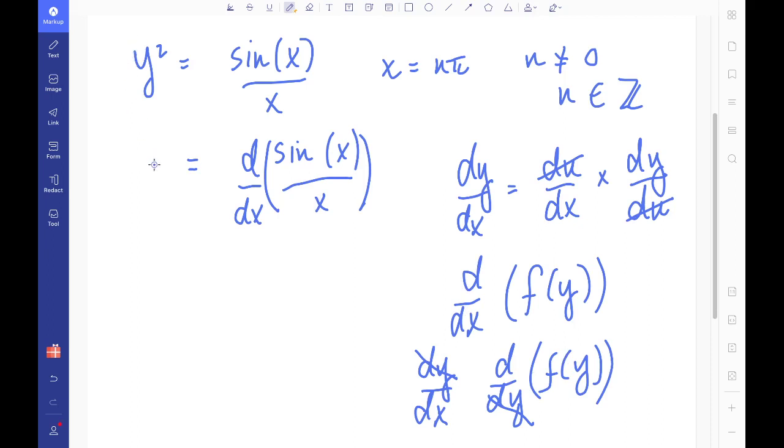So when we differentiate y squared with respect to y, we get 2y. And we need to multiply that by dy dx. Okay, so we can get an expression for dy dx in terms of the differential of sin x over x and 2y. So let's write that down.